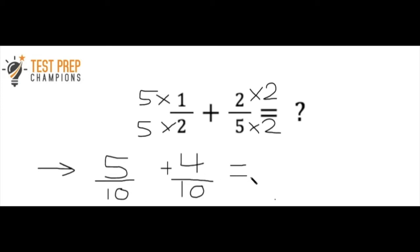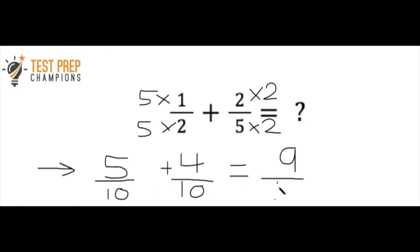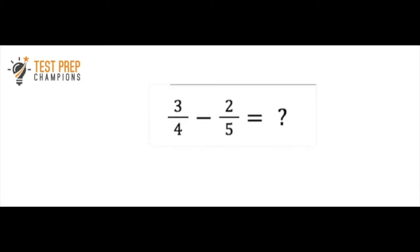The denominators are the same, so we add the top numbers: five plus four is nine. We keep the denominator the same — we don't do ten plus ten. The final answer is nine over ten.